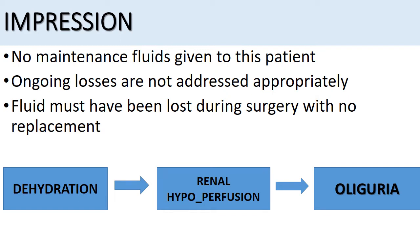Some fluid must have been lost during surgery — there must be some estimated blood loss even if there were no complications — and that should be replaced as well. Right now, 600 ml has already been lost just in the nasogastric tube, and the patient has only been given 500 ml, which does not cover the ongoing losses, provides no maintenance fluids, and does not account for intraoperative fluid loss. Our clinical impression is that the patient is in hypovolemia — moderate to severe dehydration — which has caused renal hypoperfusion and ultimately oliguria.